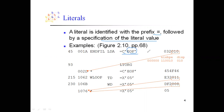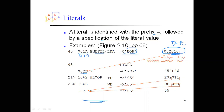Now, how do you decide on the displacement — the three hex digits here? It is nothing but target address minus program counter. The target address is wherever EOF is located. Since EOF is a literal, it is usually stored at the bottom of the assembly code. Here we have =C'EOF' at address 002D, so the target address is 002D. The program counter value — the address of the next instruction — is 001D.